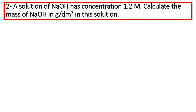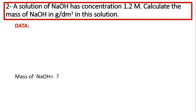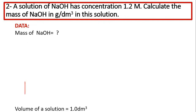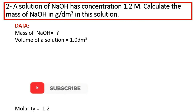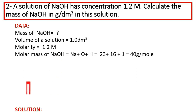Question number two: A solution of NaOH has a concentration of 1.2 M. Calculate the mass of NaOH in gram per dm³. Data: mass of NaOH is unknown, volume of solution is 1.0 dm³, molarity is 1.2 M, and molar mass of NaOH is 40 g/mol.